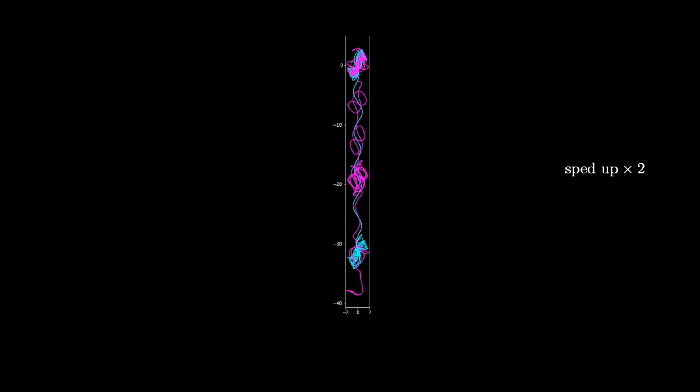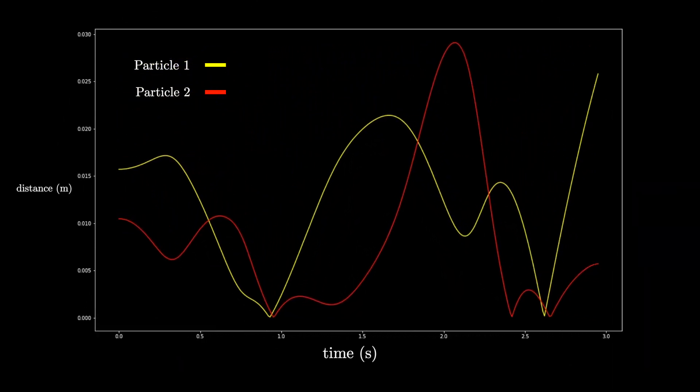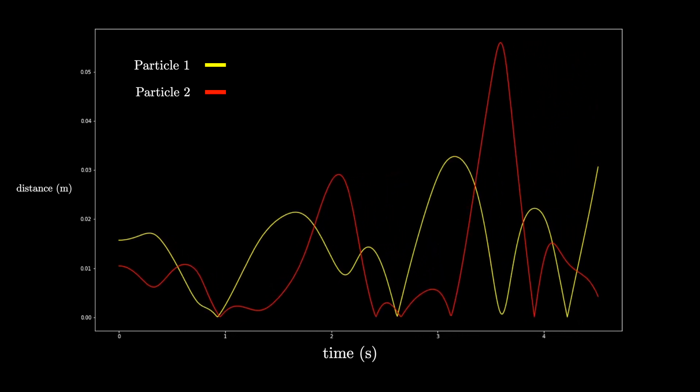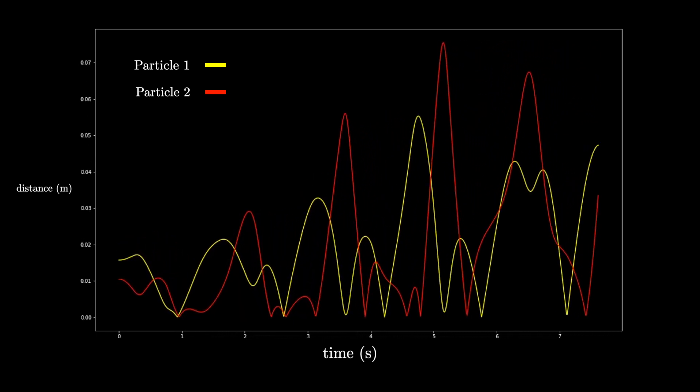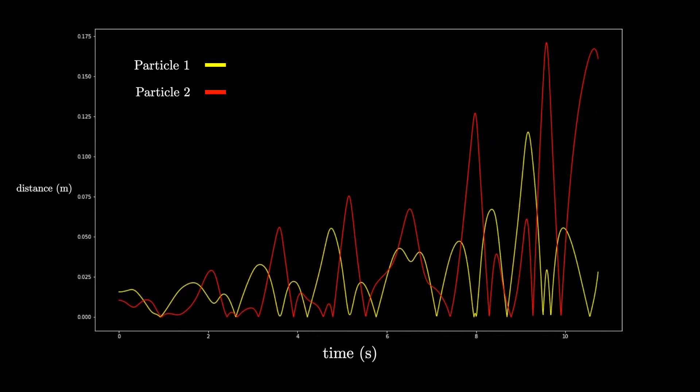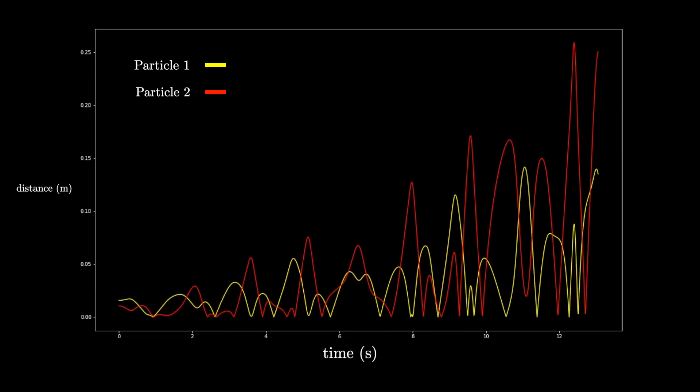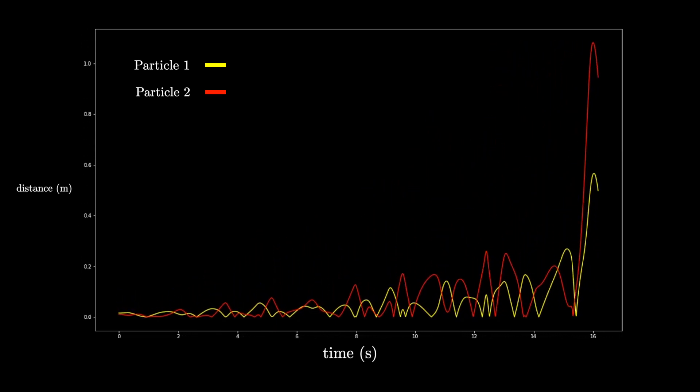Finally, we can even get a quantitative sense of just how different the motions are. Here we'll plot the distance between each point particle throughout the evolution. So what I've plotted here is the sum of the Euclidean distance between each of the corresponding particles. And although the total distance oscillates, there is a clear upwards trend. Now I think it is evident why the double pendulum is a classic example of a physical system being chaotic.